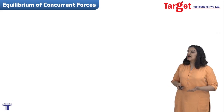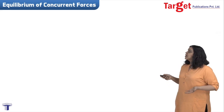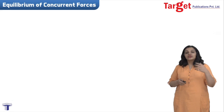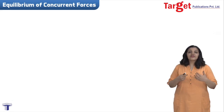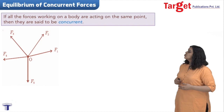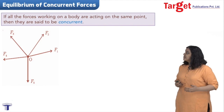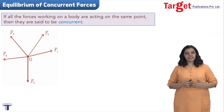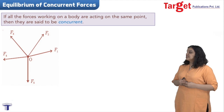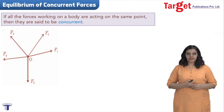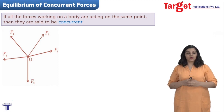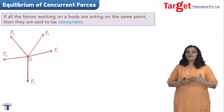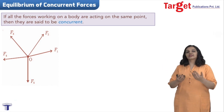The first question to ask under the equilibrium of concurrent forces is: what do you mean by concurrent forces? By definition, if all the forces working on a body act at a single point, then these forces are said to be concurrent. You can see in the image that there are five forces acting at the same point O, and therefore by definition these forces are concurrent.